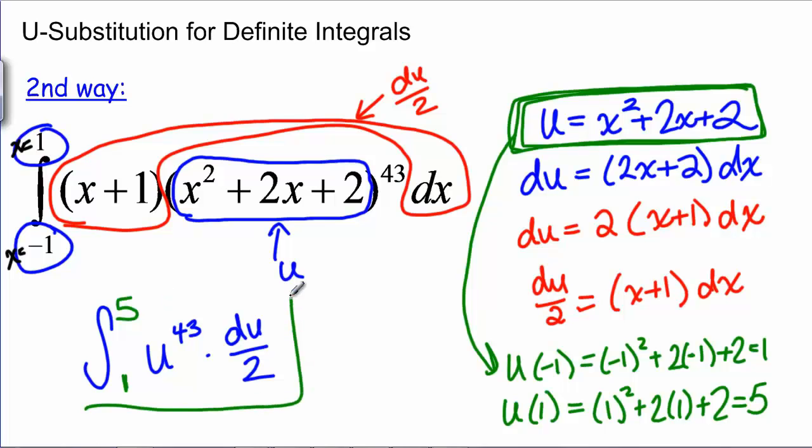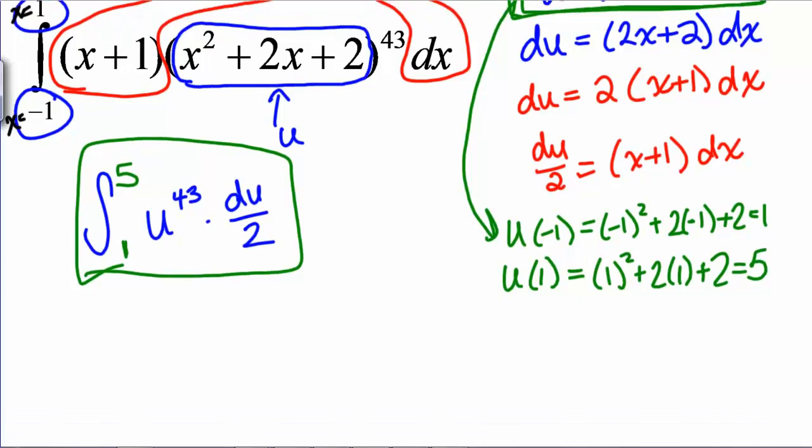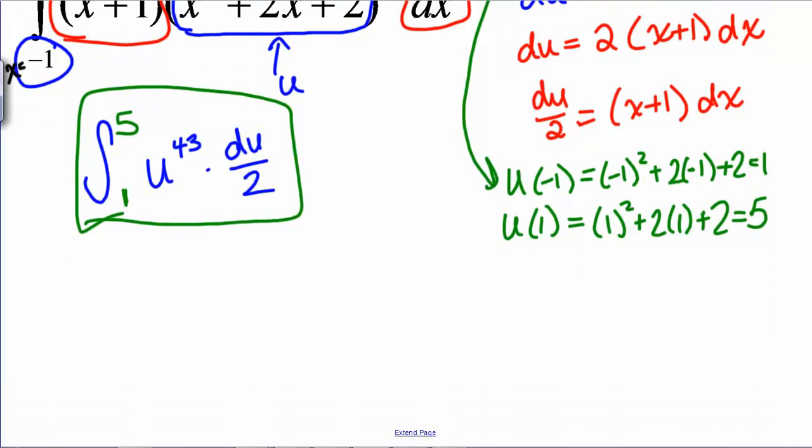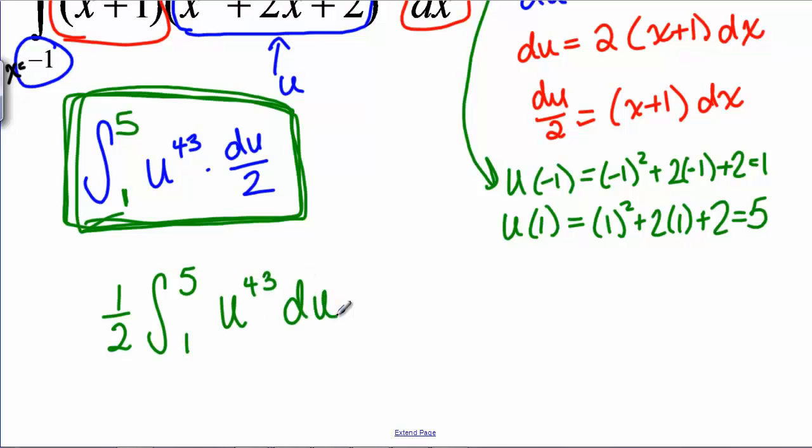So now I have a new integral, a new definite integral that's entirely in terms of U and doesn't have anything to do with X. So when I do the problem this way, I never need to go back to X. In fact, I never need to remember the original problem at all. I can just do this new problem. So if I do this new problem, I can pull the 1/2 out front. So I want the integral from 1 to 5 of U to the 43rd du, and then I just use the power rule.